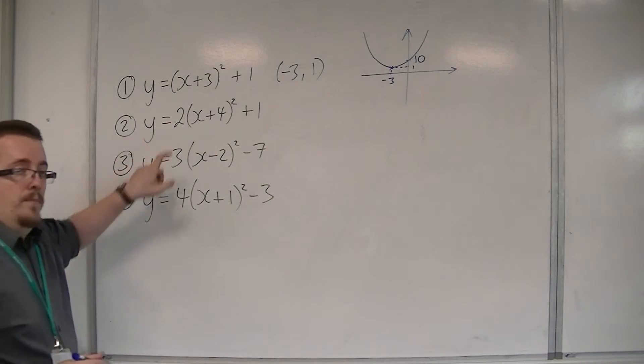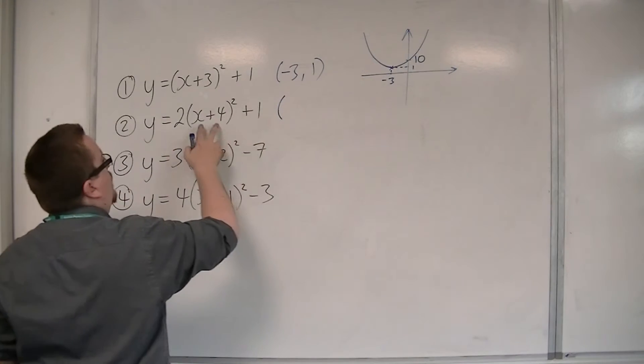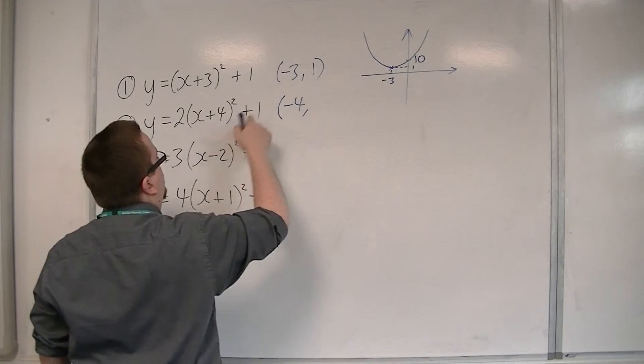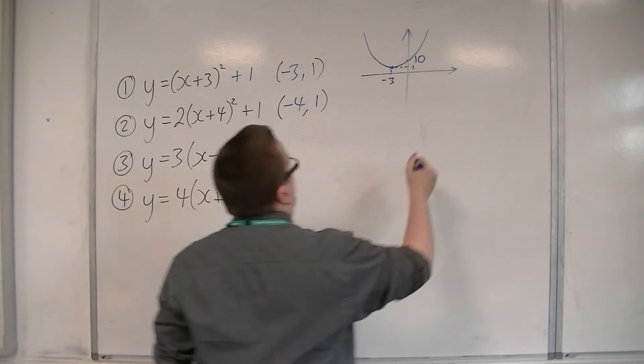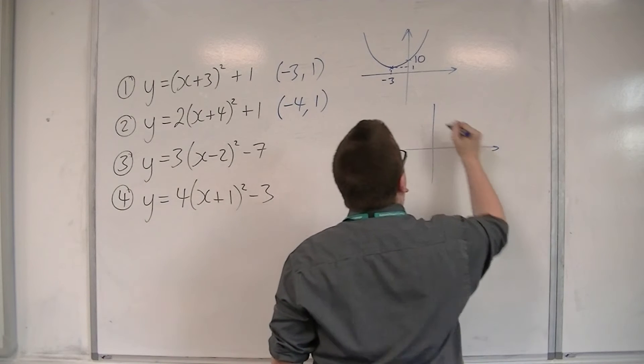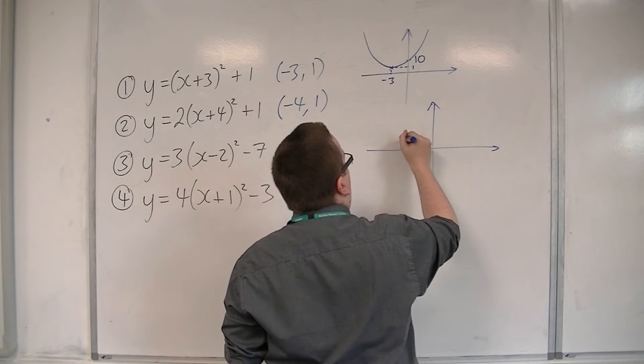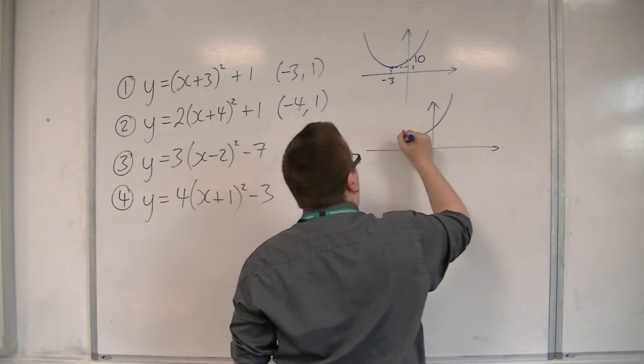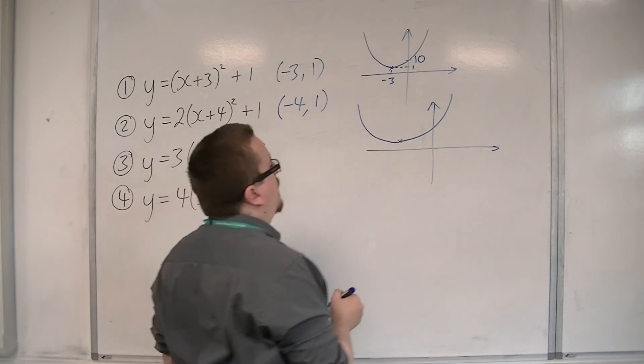Let's look at number 2. The coordinates of the vertex will be at minus 4, 1. So minus 4, 1 this time. So about there. So the parabola looks something like that.